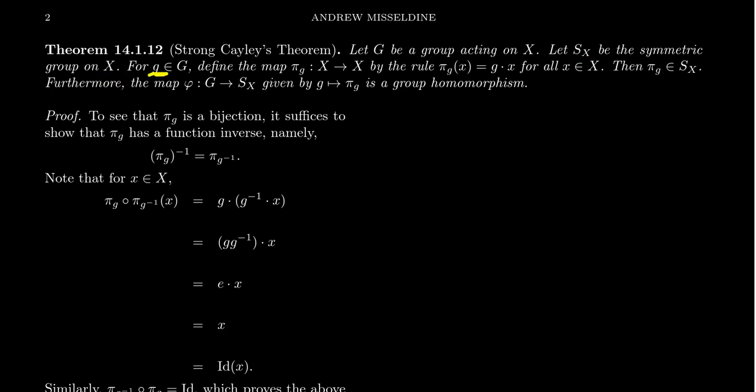For any element g inside of the group G, we can come up with a map we'll call π_g. This will be a permutation from X to X, defined by the rule π_g(x) = g · x, the group action. Our first claim is that this map π_g is in fact a permutation, so it belongs to S_X.